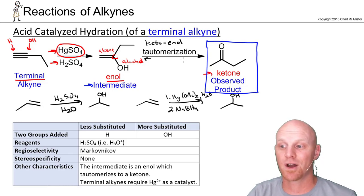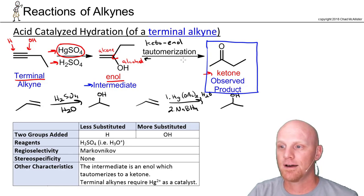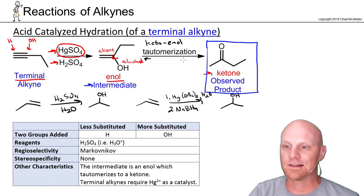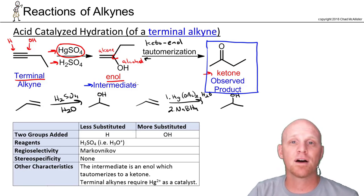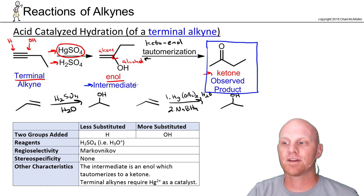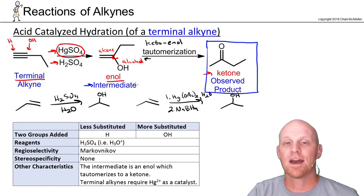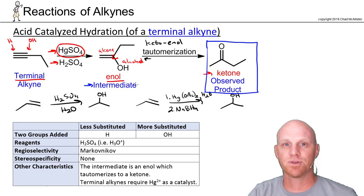We'll deal more with keto-enol tautomerization in a bit, but again: we added H and OH in Markovnikov fashion, but instead of ending up with an enol, that enol tautomerizes to a ketone — and that's the product you're supposed to predict.